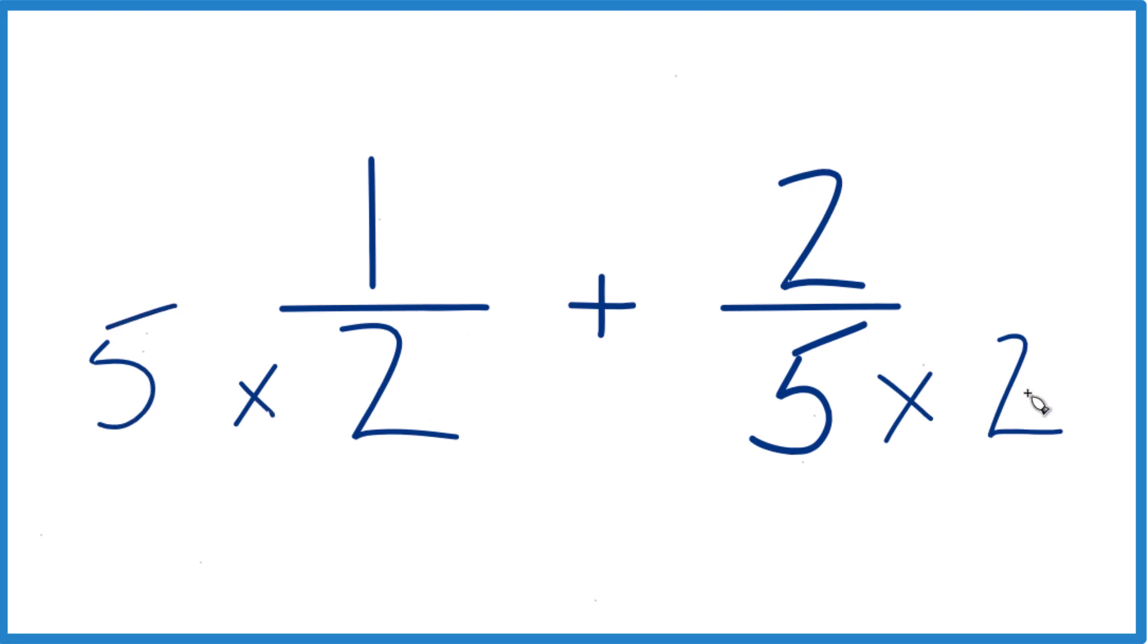So then we'd have the same denominator. But we can't just multiply the denominator by a number. We need to multiply the numerator by that same number. So five times one. That's because five over five, that's just one. Five divided by five is one. So we don't change the value, just the way it's represented.